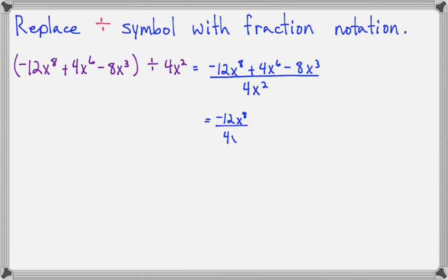So, we'll have negative 12x to the 8th over 4x squared plus 4x to the 6th over 4x squared minus 8x to the 3rd over 4x squared. So, each term gets its own copy of the denominator, and then we simplify.